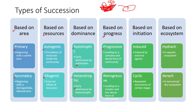Based on progress, succession can be progressive, leading to a more complex and dense form, or retrogressive, leading to a simpler or less dense form. Based on initiation, succession can be induced by an external agent — for example, fire — or it can be cyclic, where repetitive usage leads to destruction, such as humans exhausting all resources until the region again becomes available for pioneer species to return.